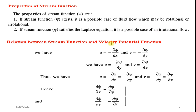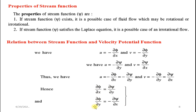Relation between stream function and velocity potential function: From velocity potential, u = −∂φ/∂x and v = −∂φ/∂y. From stream function, u = −∂ψ/∂y and v = ∂ψ/∂x. Equating the u components: ∂φ/∂x = ∂ψ/∂y. Equating the v components: ∂φ/∂y = −∂ψ/∂x. These two relations are very important and must be remembered.